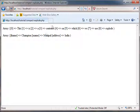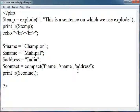So in this way, we have created two different arrays—one from a string and another from different variables. This is about the compact and explode functions in PHP. Thank you very much.